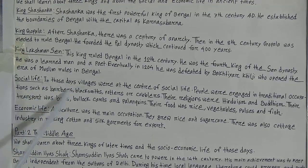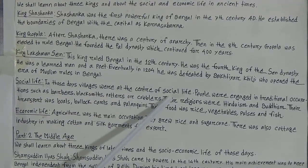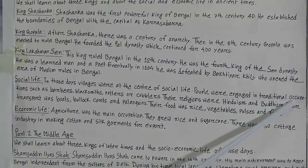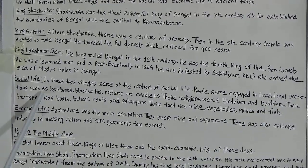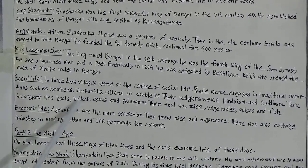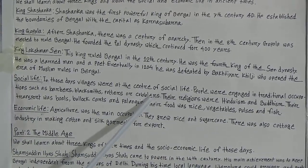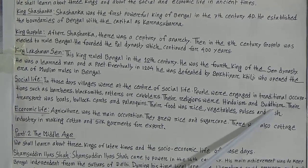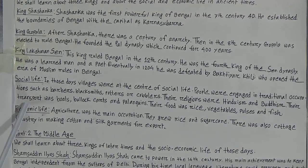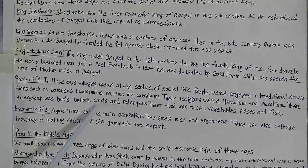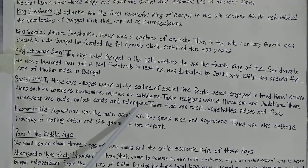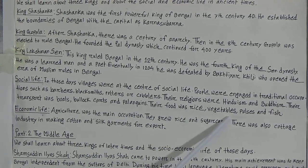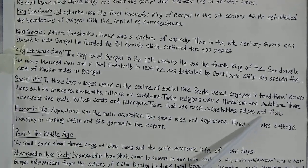Social life: in those days, villages were at the center of social life. People were engaged in traditional occupations such as barbers, blacksmiths, porters, or cobblers. Their religions were Hinduism and Buddhism. Their transport was boats, bullocks, carts, and palanquins. Their food was rice, vegetables, pulses, and fish.